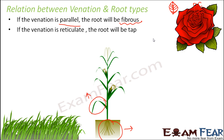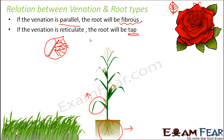If the venation is reticulate, for example in a rose plant, what happens in reticulate venation? You have one midrib or main vein, and from the main vein you have veinlets arising — like this. This is how it looks in reticulate venation. This is linked to the tap root system, where you also have one main root and then branches arising from it. So if the venation is reticulate, then the root system is tap root.